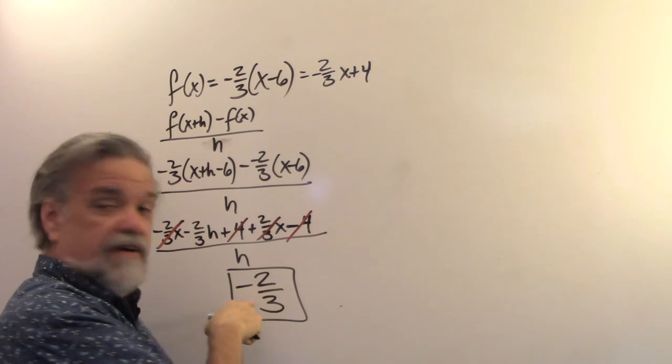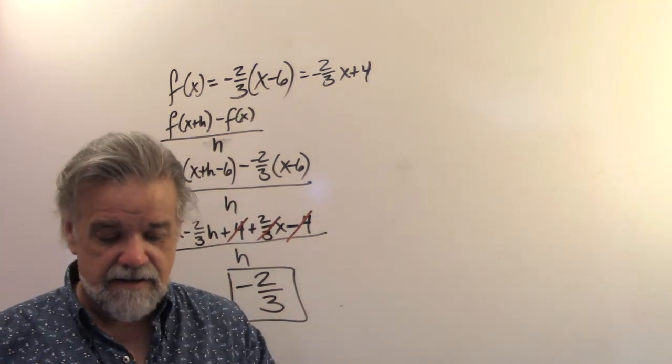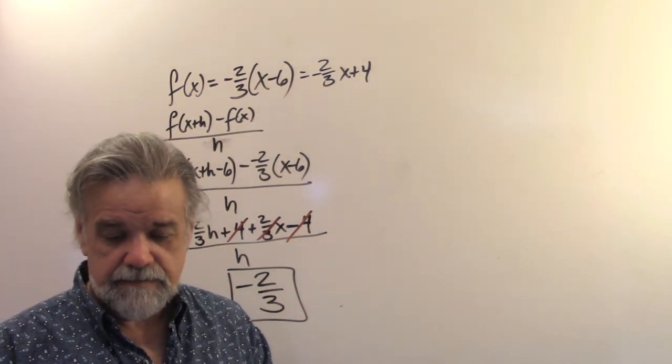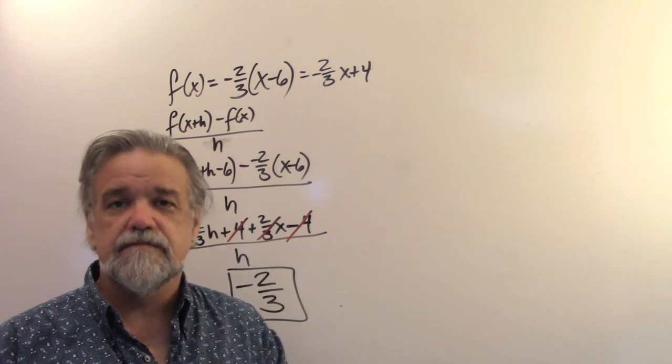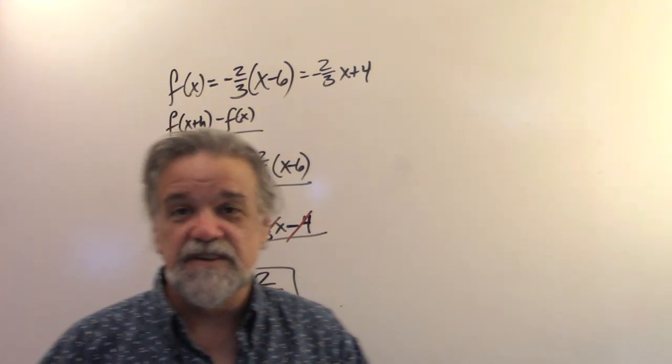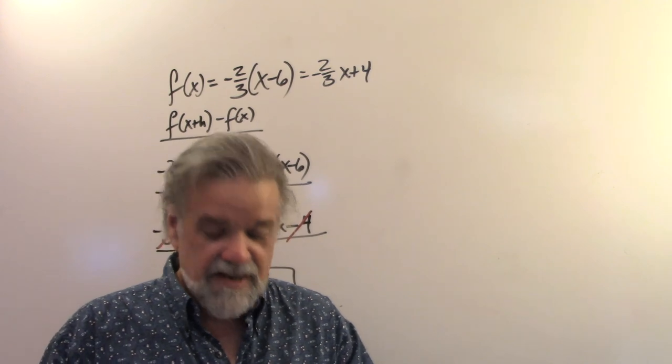And sure enough, there's the slope. And there it is again. And if I, well, you can imagine what the graph is going to look like. It's just going to look like a line.